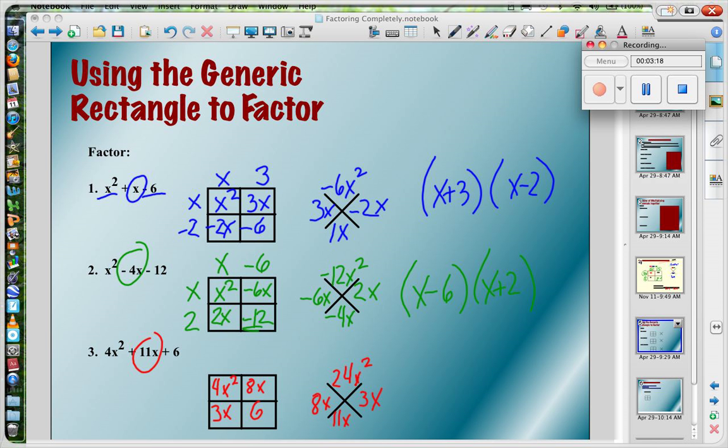Now, in my top row, the greatest common factor of the numbers is 4, and with my variables, they both have an x. So 4x times x is 4x squared. 4x times 2 is 8x. x times 3 is 3x. And 2 times 3 is 6.